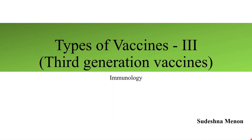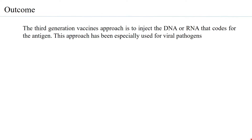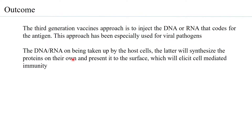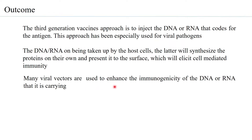In this session we will be considering third generation vaccines. The third generation vaccine approach is basically to inject the DNA or RNA directly, coding for an antigenic peptide or the antigen itself. This approach has been especially used for viral pathogens. The host cells, on taking up the DNA or RNA, will synthesize the proteins on their own and present it on the surface, which will elicit cell-mediated immunity. Many viral vectors are used to enhance the immunogenicity of the DNA or RNA they carry.